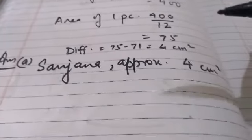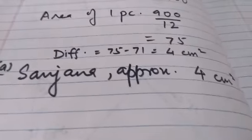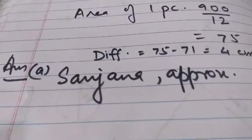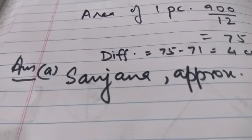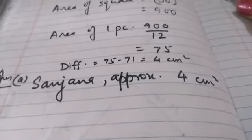So answer will be part A, that is Sanjana, approximately 4 cm square has bought the better deal and the quantity will be approximately 4. So that's all. Thank you.